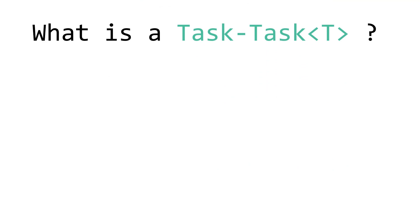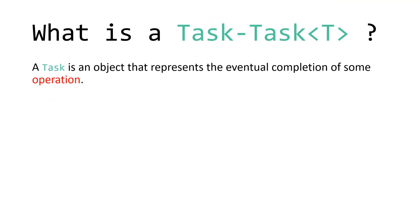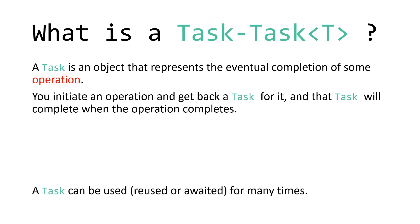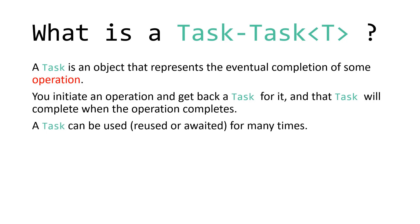So what is a task? A task is an object that represents the eventual completion of some operation. A task is a promise — you initiate an operation and get back a task, and that task will complete when the operation completes. The task can be used multiple times; you can await them, reuse them, store them, and share them with others.